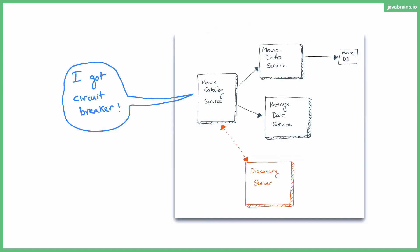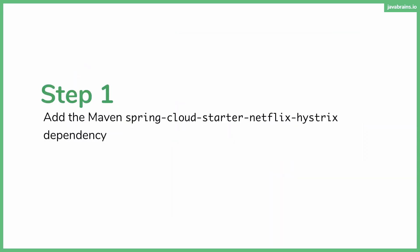So this is the microservice that needs to break the circuit — it's the movie catalog service. This is where we're going to be adding the circuit breaker. I'm going to run through the example of what it takes to write that in the code in the movie catalog service. Step one is to add the Maven dependency to the pom.xml.